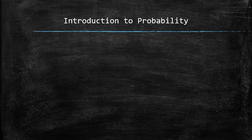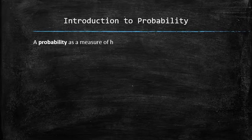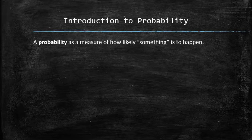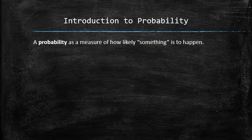To quantify the uncertainties around us, we use a probability as a measure of how likely something is to happen. The more likely it is to happen, the higher its probability, and the less likely something to happen, the less its probability. We have to start with a few definitions.